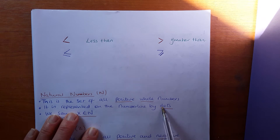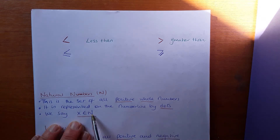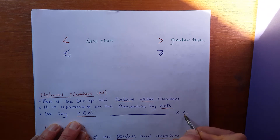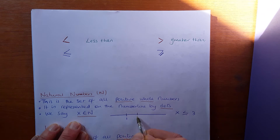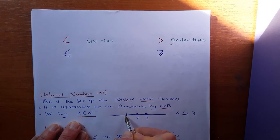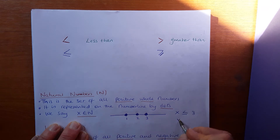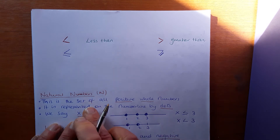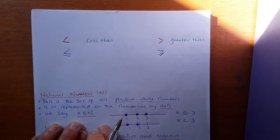Natural numbers are represented on the number line by dots. We say x is an element of N for natural numbers. If you had x less than or equal to three on a number line, you'd have one, two, three — it could be three, two, or one, but not zero or minus one. If it was x less than three, it doesn't include three, so you put dots only at one and two.